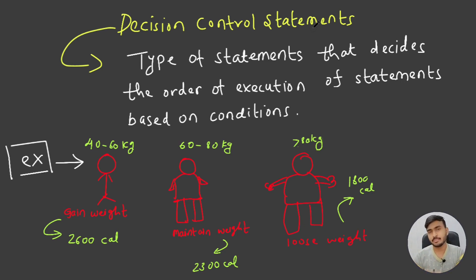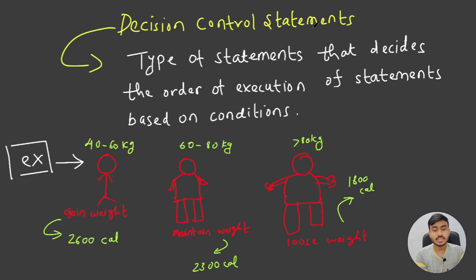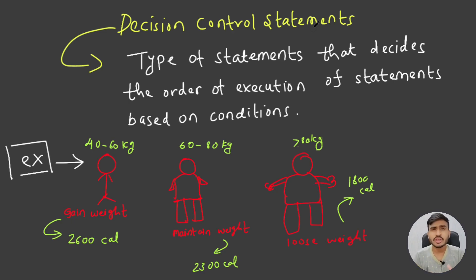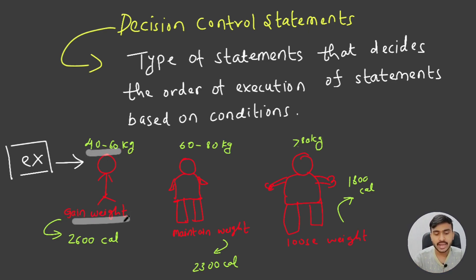Then there are overweight people who usually have weight greater than 80 kg. Now, if you are in the slim category — 40 to 60 kg — then maybe you should eat a greater number of calories to increase your weight, because you seriously need to gain weight. So for this category, I have advised that you should gain weight and eat at least 2600 calories per day.